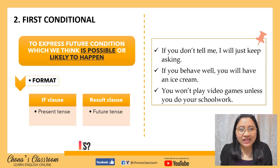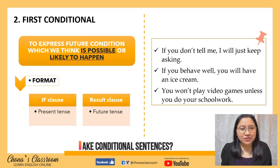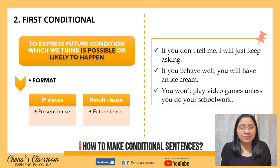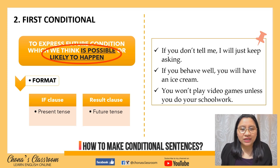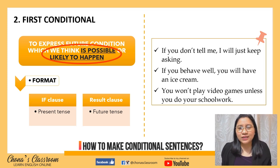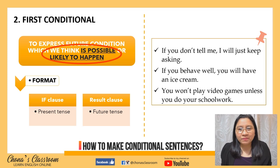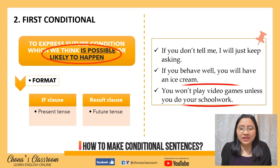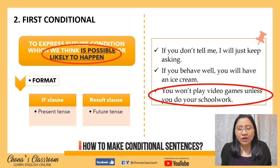The second type of conditional is the first conditional. The first conditional is used to express a future condition which we think is possible or likely to happen. The format uses the present tense in the if clause and the future tense in the result clause. For example: 'If you don't tell me, I will just keep asking,' or 'If you behave well, you will have an ice cream.' Another one: 'You won't play video games unless you do your school work.'